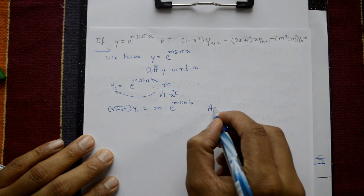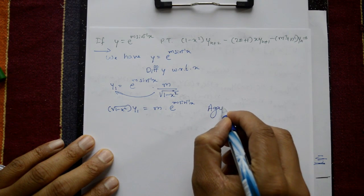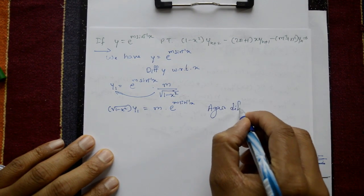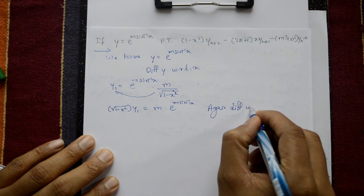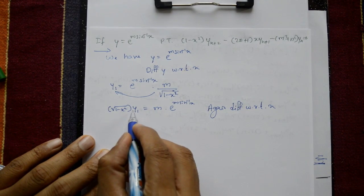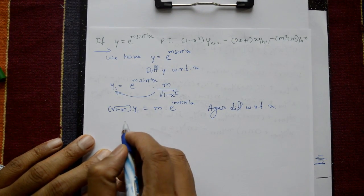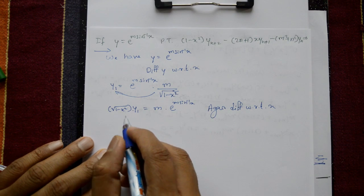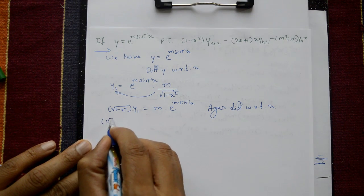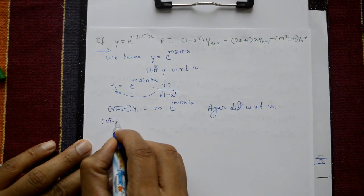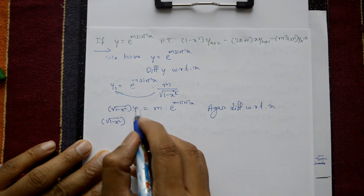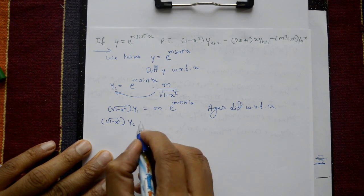Once again, differentiate with respect to x. Now, left hand side is a product rule, u into v. Square root of 1 minus x square as it is, differentiation of y1 is y2.